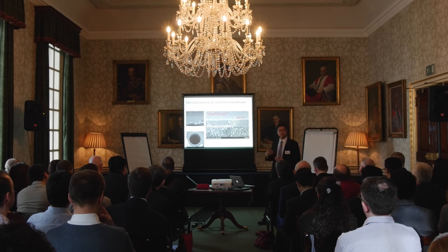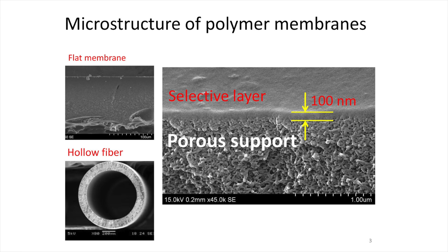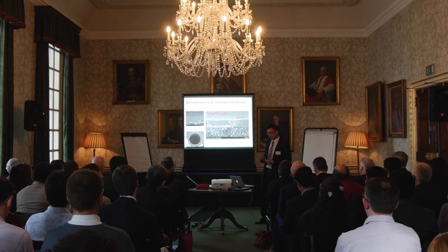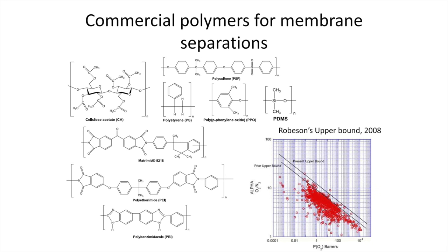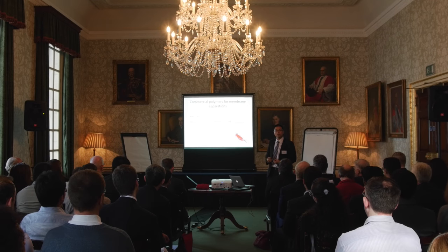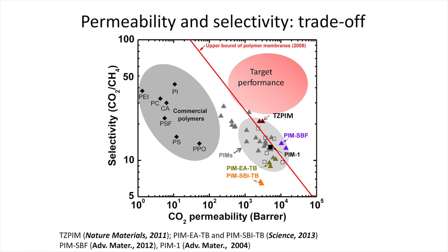If you look at commercial gas separation membranes, they can be fabricated into different modules like flat-sheet or hollow fibres, but the intrinsic selective layer is a roughly 100-nanometre polymer film. The internal physical properties of these polymers determine the separation performance. Currently the polymers used by industry are still very limited — from early cellulose acetate to the second generation polyimide. At university we're looking at next-generation materials that can give both high permeability and high selectivity.